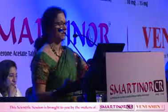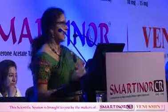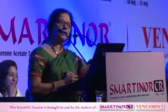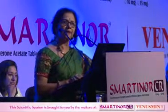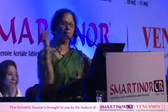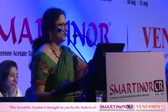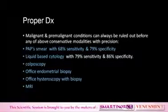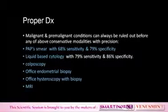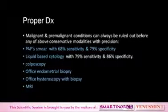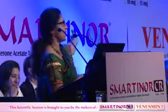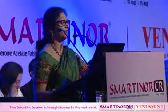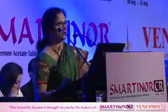Even in CA endometrium nowadays, as an ART specialist, I have to give a baby to them also — so I'll cure it medically and surgically and then give her a baby. Why remove the uterus? There are various diagnostic modalities available to us: Pap smear with 68% sensitivity and 79% specificity, liquid-based cytology, colposcopy which tells 97% perfectly, office endometrial biopsy, office hysteroscopy with biopsy, MRI, and excellent 3D/4D ultrasound. You can diagnose when there is no malignancy — why hysterectomy?